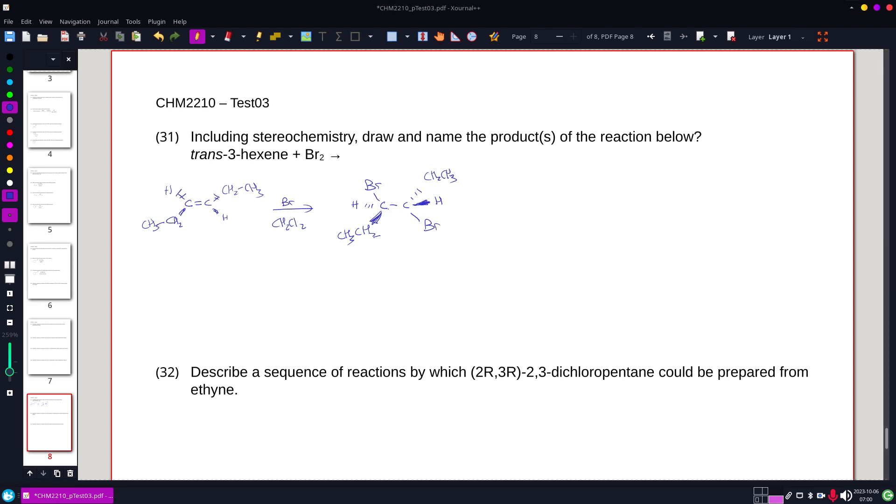To figure out the rotation, I'm gonna do this left one first. That's gotta be my number one position. Followed by this because it's a carbon with a bromine. Followed by the carbon attached to another carbon. So I have clockwise for that. H is in the back. So this is R.